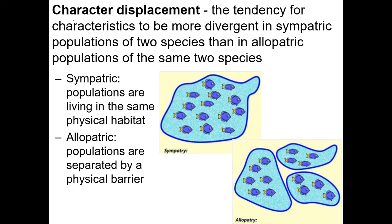Here's another closely related idea: character displacement. This is the tendency for characteristics to be more divergent — more different — in sympatric populations, meaning when species are living together, as opposed to allopatric populations when they're living apart. If two similar species eat the same kinds of things, one will tend to evolve a different size or resource use. If it doesn't, it'll die out. So you don't always get character displacement — what you might get instead is extinction.